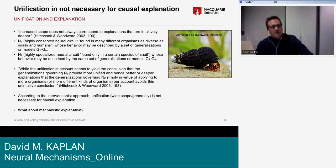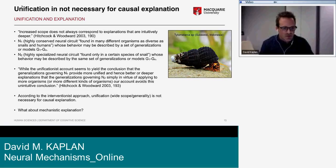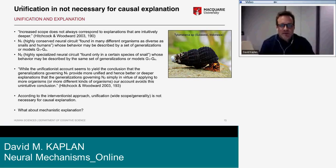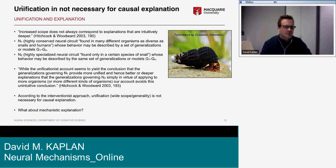While the unification account concludes that generalizations governing the conserved circuit provide better or deeper explanations simply by virtue of applying to more organisms, the interventionist account avoids this unintuitive conclusion. According to the interventionist approach, scope has very little or nothing to do with explanatory power — instead, invariance under causal intervention is where models get their explanatory power.